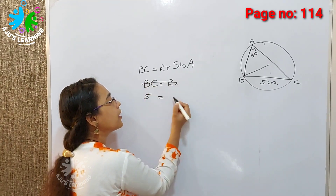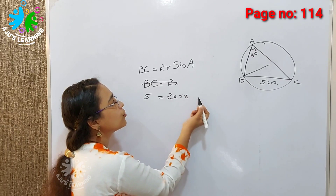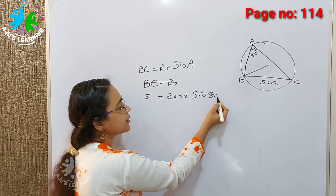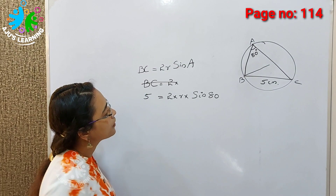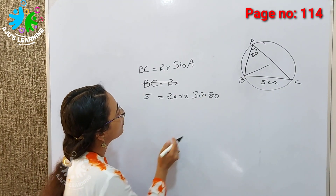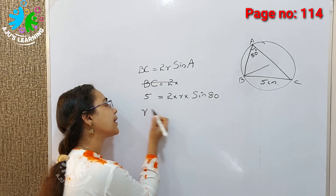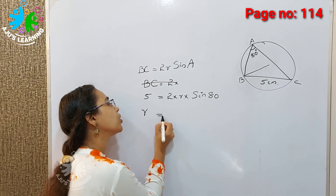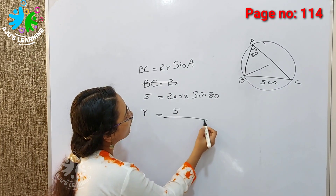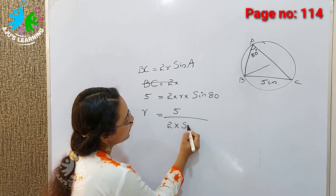So BC equals 2 into R into sine 80. Therefore R equals 5 divided by 2 into sine 80.